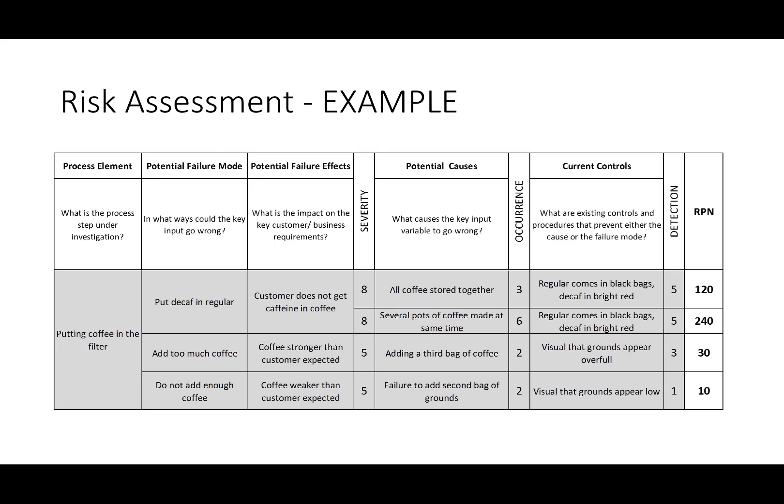Here's an example of a risk assessment. The process step is putting coffee in the filter. Brainstorming potential failure modes: you could put decaf in the regular, add too much coffee, or not add enough coffee. For each failure mode, you look at the impact on key customer or business requirements. If you put decaf in the regular, the customer does not get caffeine, and that's assessed as a severity of 8 out of 10. Potential causes could be that all coffee is stored together or several pots are made at the same time — the likelihood of occurrence is much higher for the second one. The current control is that regular coffee comes in black bags while decaf comes in bright red, putting a detection risk likelihood of 5. Those give RPN values of 120 and 240.